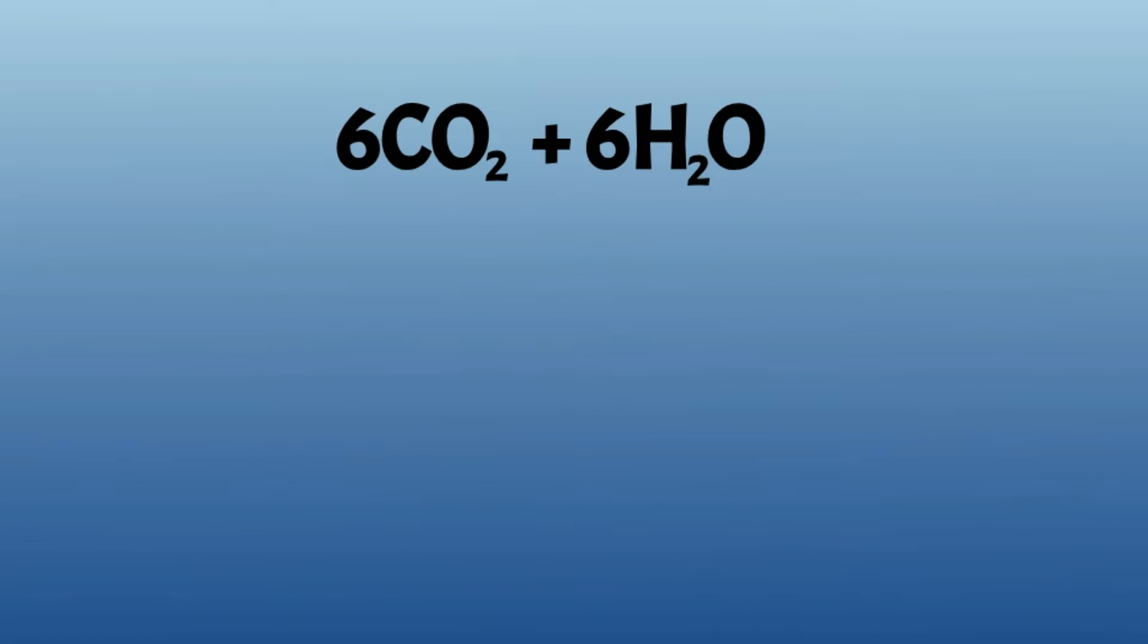The formula of photosynthesis can be a bit confusing, so let's break it down. 6CO2 is carbon dioxide, and the 6 means that it needs at least 6 carbon dioxide molecules.